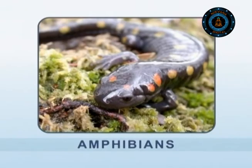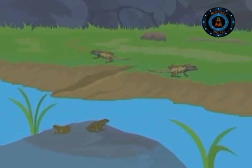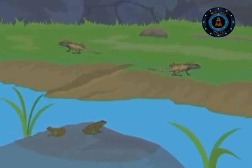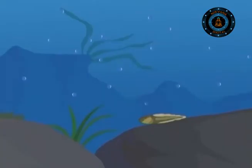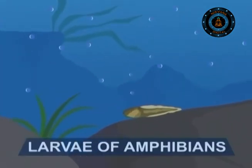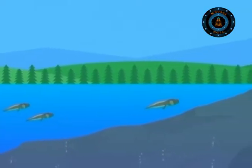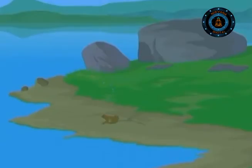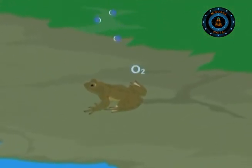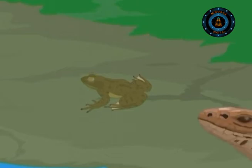Freshwater habitats are also ideal breeding grounds for amphibians — animals like frogs and salamanders that live partly in water and partly on land. The larvae of most amphibians have gills and live underwater, but as they grow into adults, they develop lungs and legs and can walk on land. They need to keep their skin moist, as amphibians breathe through their damp skin. The skins of many species also contain poison glands which they use to ward off predators.